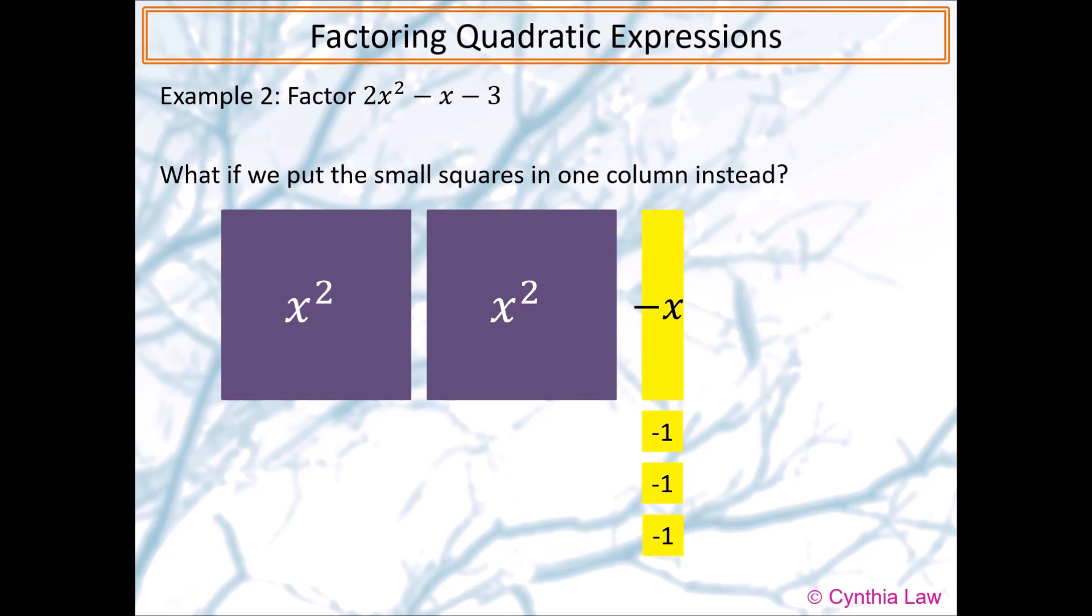What if we put the small squares in one column instead? Then, we can put the yellow rectangular strip with the column. We need to fill the empty space with rectangular strips. We would need six purple rectangular strips to make each column the same color. However, the sum of the extra strips added will not be zero. So, this approach does not work.